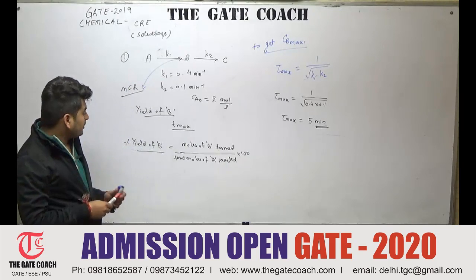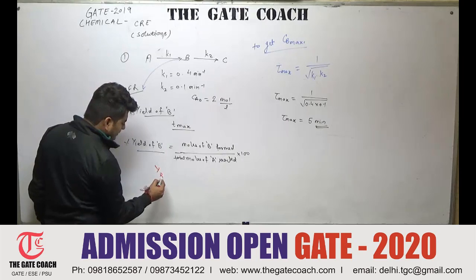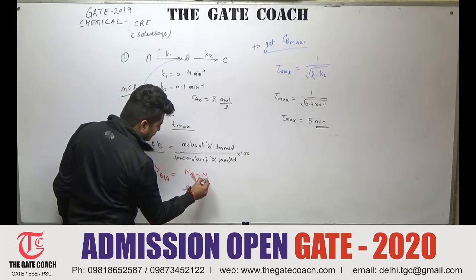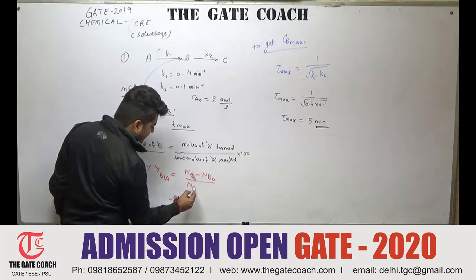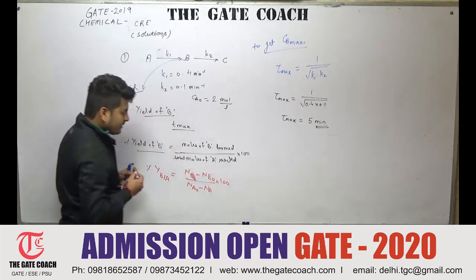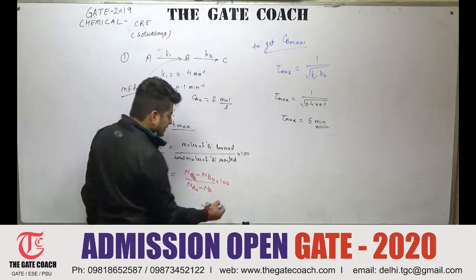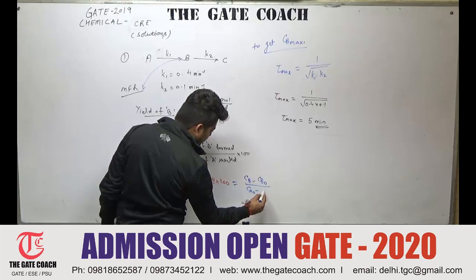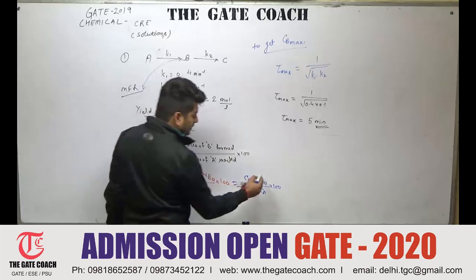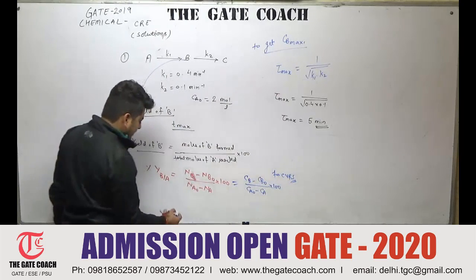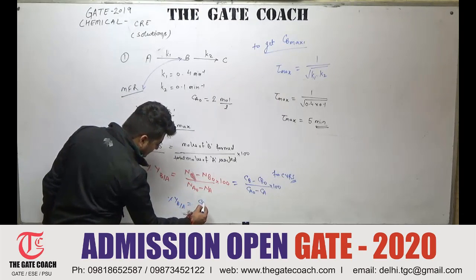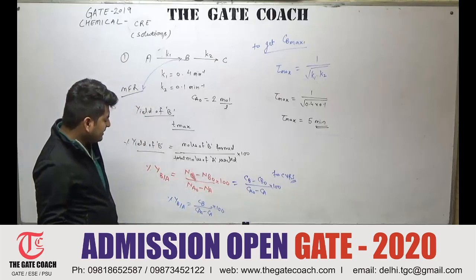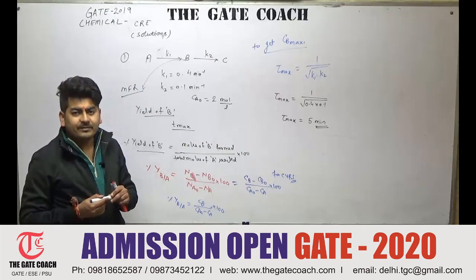Now we have to calculate the yield. The percentage yield of B becomes: moles of B formed (CB_final − CB_initial) over moles of A reacted (CA0 − CA), multiplied by 100. For a constant-volume reaction system, dividing by volume gives: percentage yield of B = CB / (CA0 − CA) × 100. We need to calculate CA and CB at tau_max = 5 minutes.